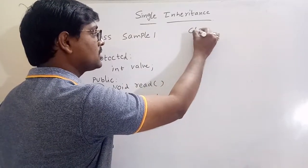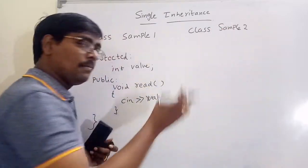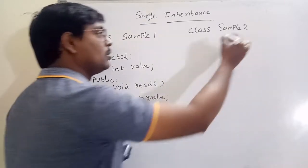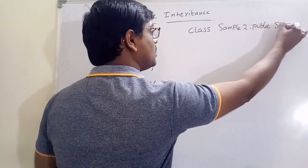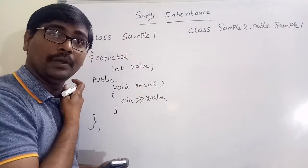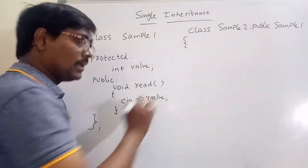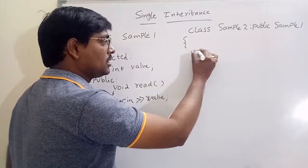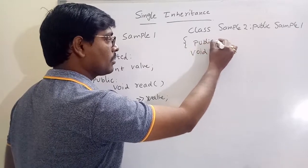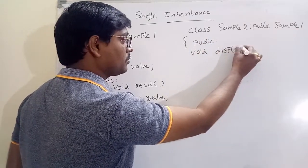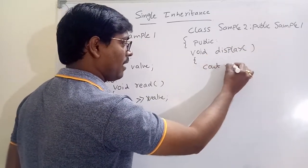Now create a child class: class sample2. To make sample2 a child class, we write: colon public sample1. That means sample2 is the child class for sample1. In this class I just display a message. So we have public void display(), which uses cout to print value.